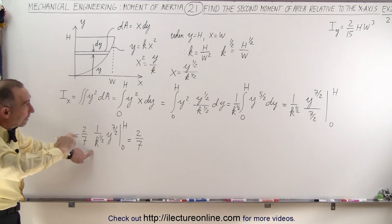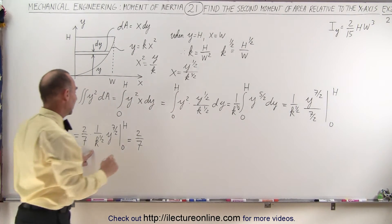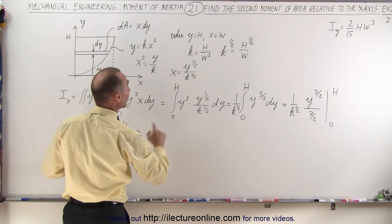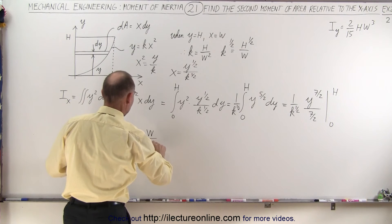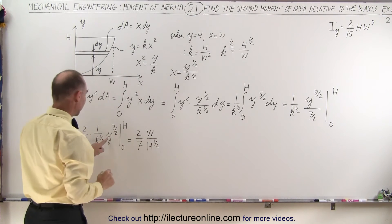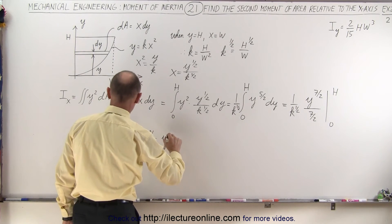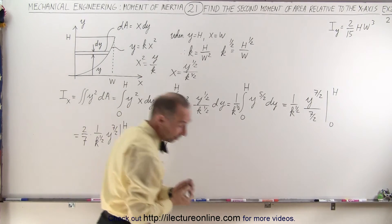And since it's a denominator, we can basically just flip it over, and this can then be written as 2 over 7 times the inverse of that, which is w divided by h to the one-half, and then here we get, not y, because we just substituted.